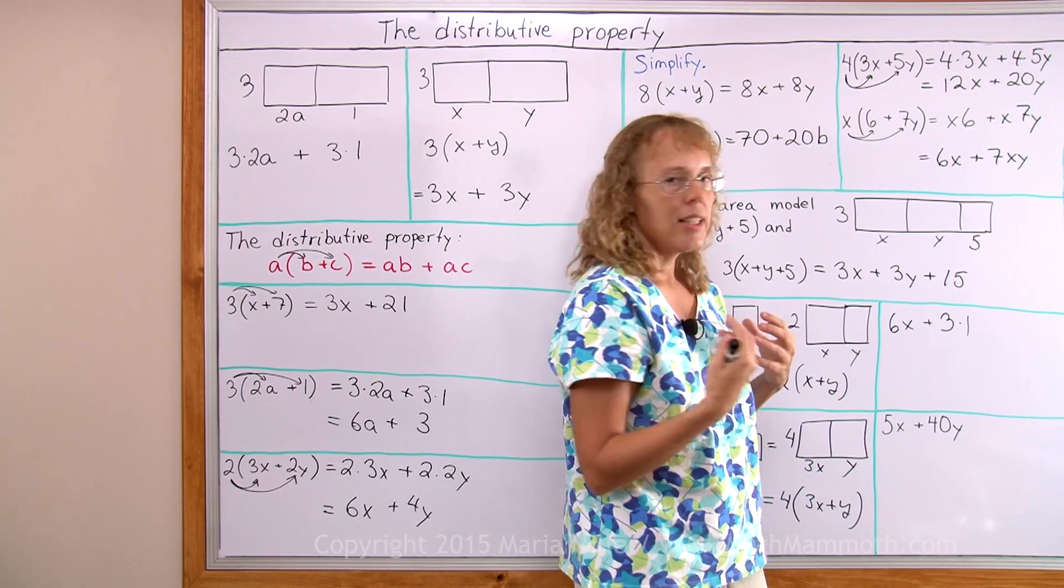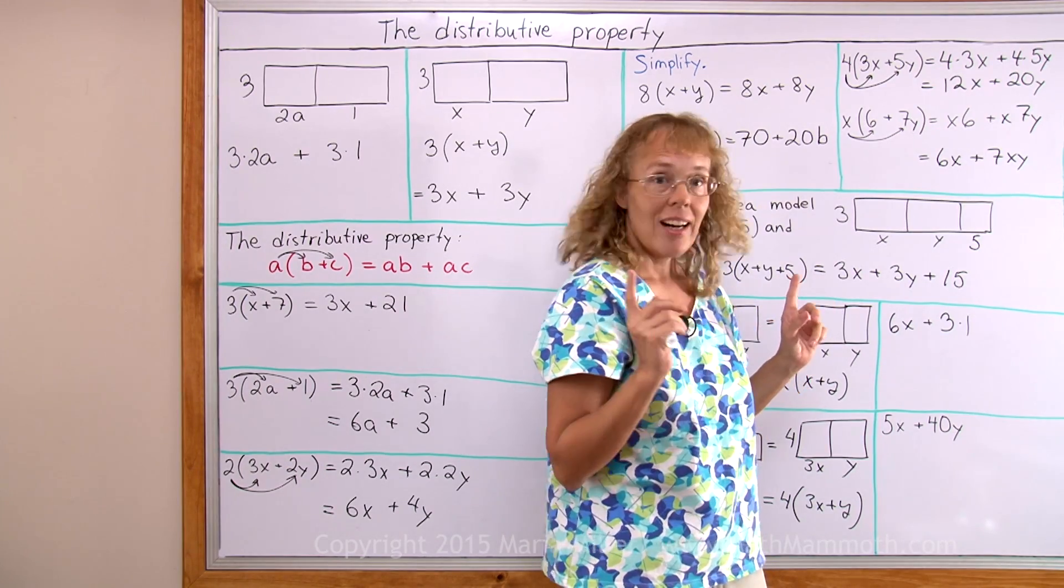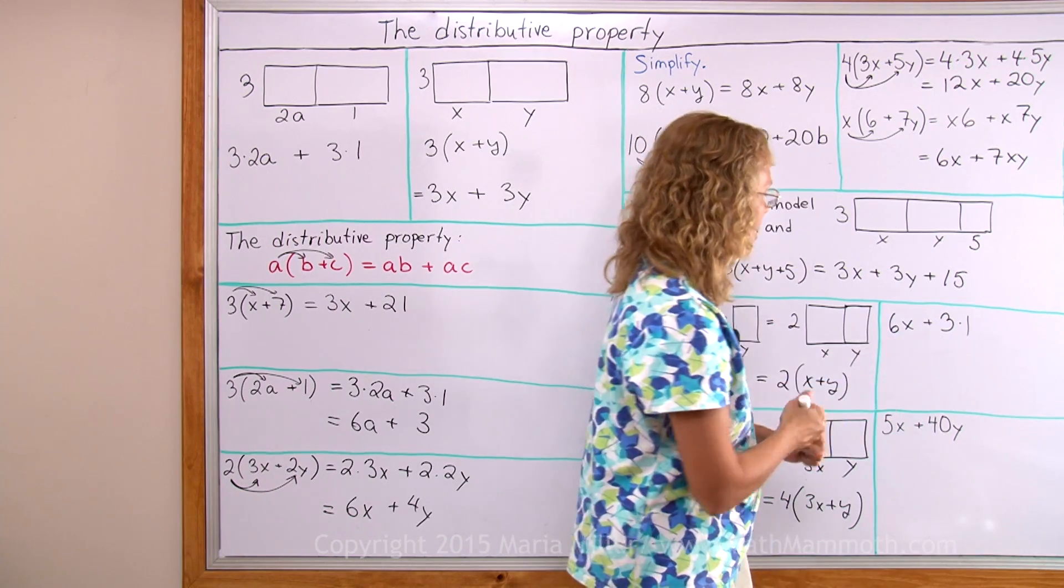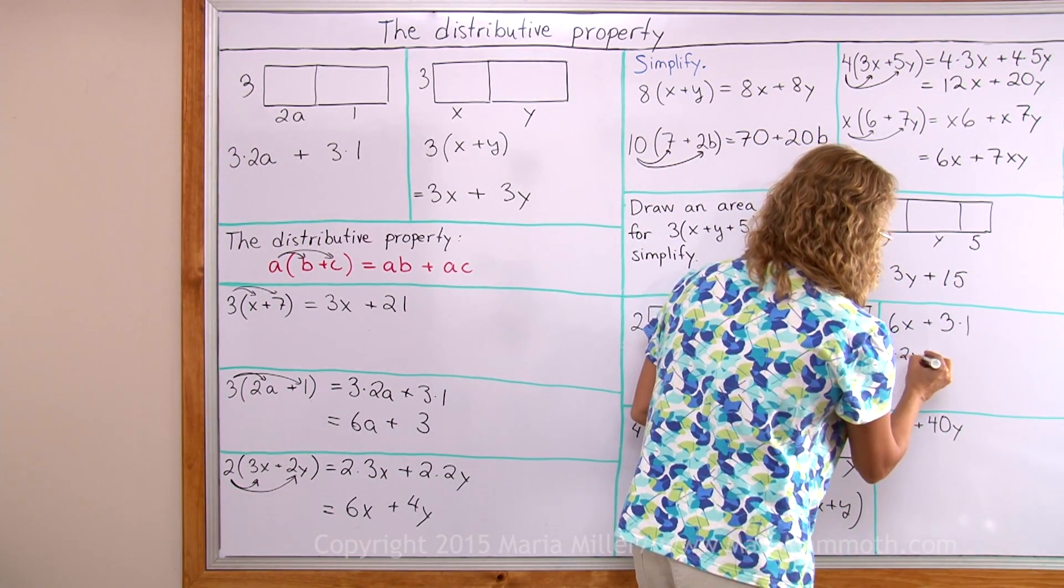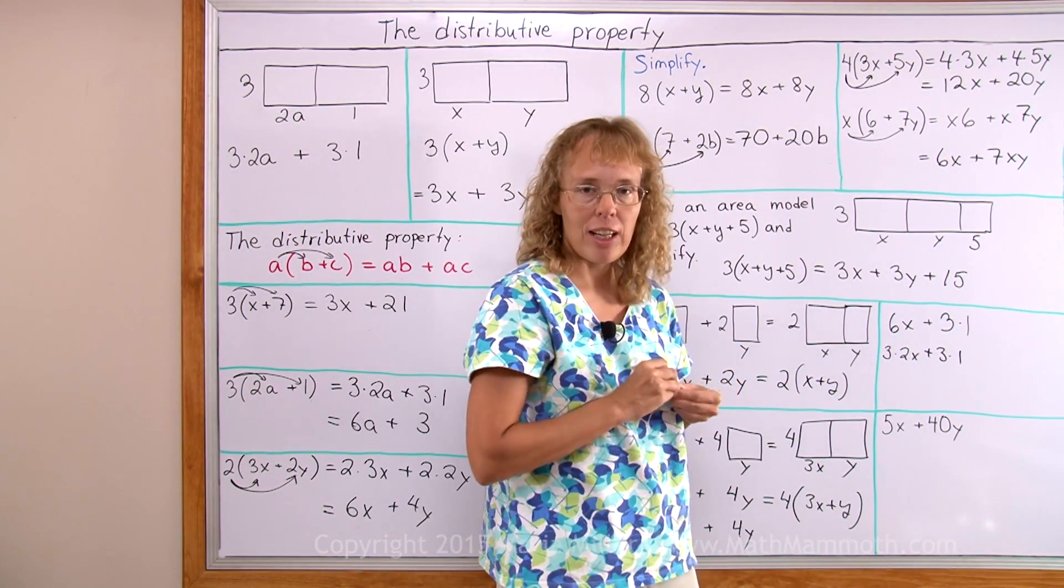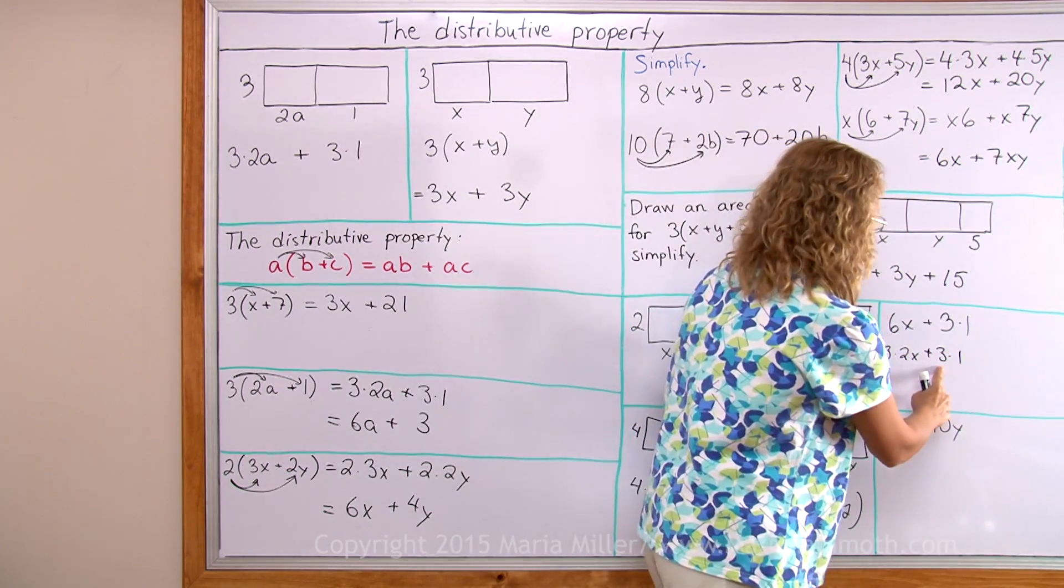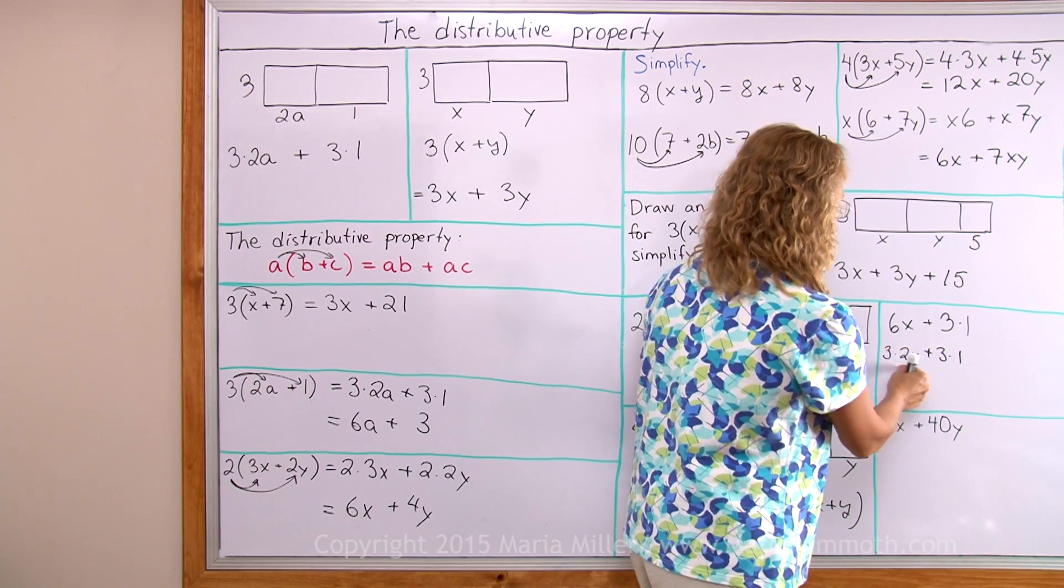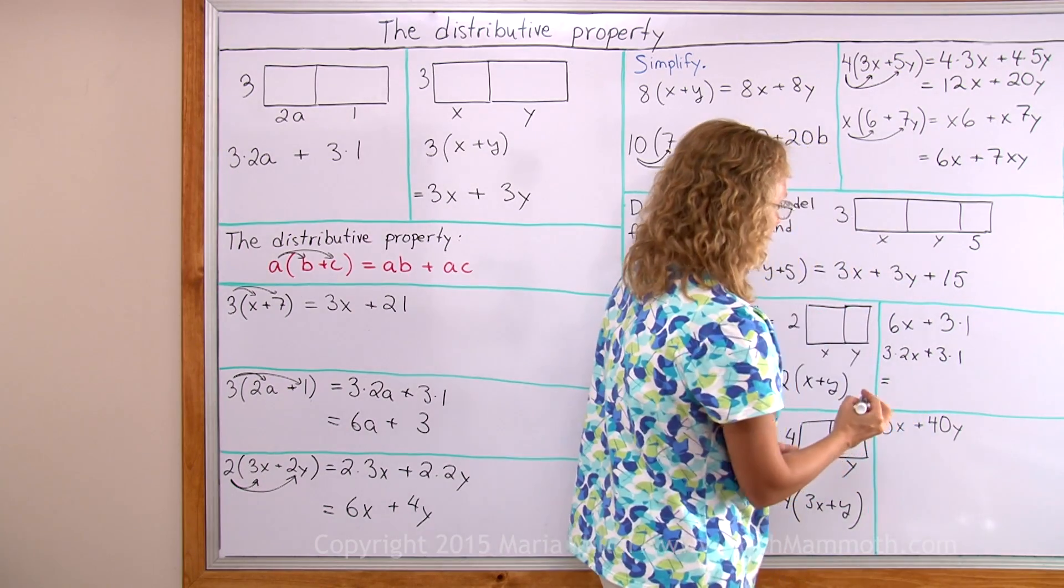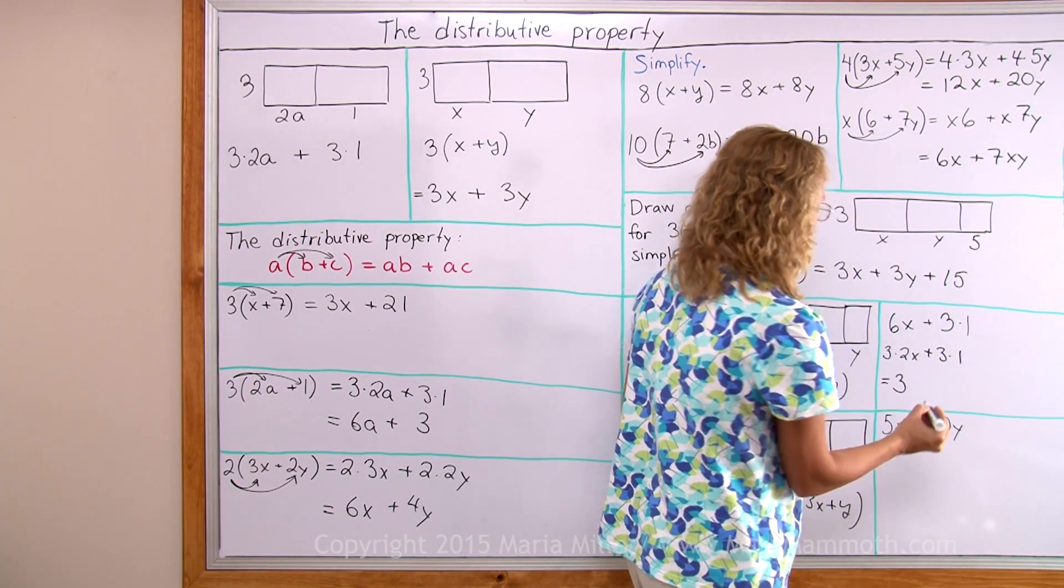This is 6 times x. It doesn't look like there's any same numbers, but I can dig out the same number 3 from this one because 6 is actually 3 times 2. Now I have my common factor 3 visible there, and I have two multiplications.